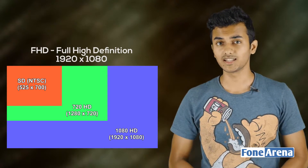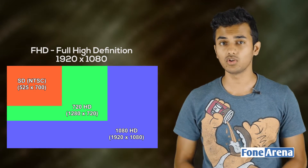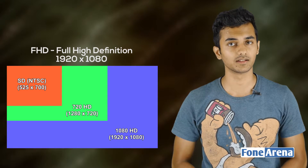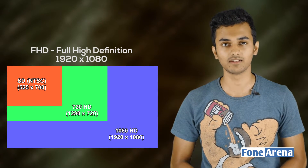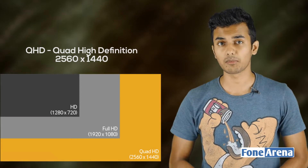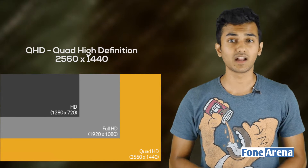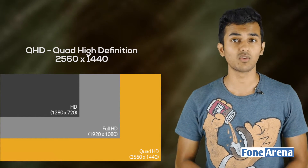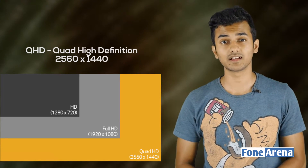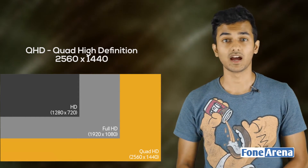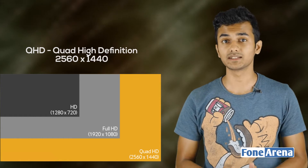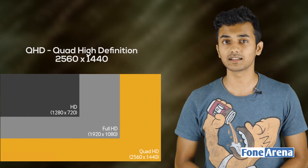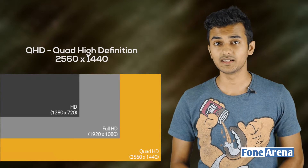Full HD, or Full High Definition, has a resolution of 1920x1080 pixels. Next is Quad HD, where the pixel count is 4 times that of HD, giving a resolution of 2560x1440 pixels. Quad HD is also referred to as 2K.